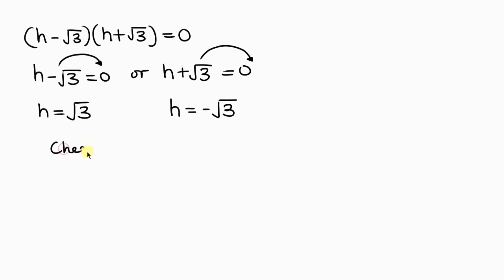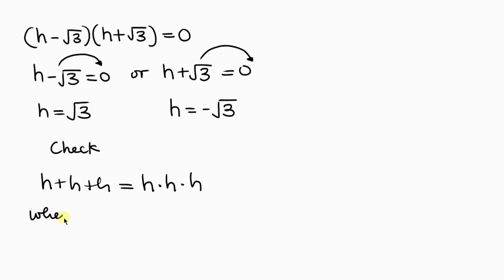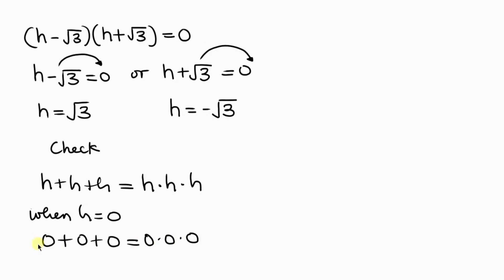Let's check our solutions. First, when H equals 0: on the left we have 0 plus 0 plus 0 equals 0, and on the right we have 0 times 0 times 0 equals 0. The left-hand side equals the right-hand side, so H equals 0 is confirmed.